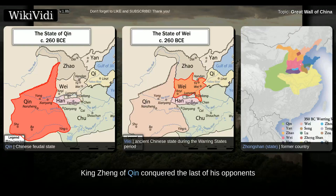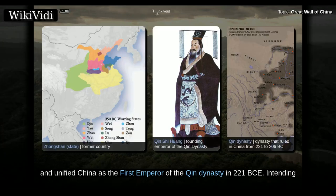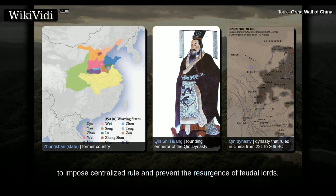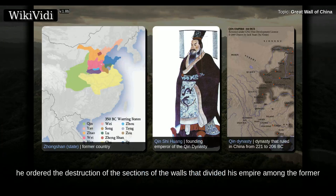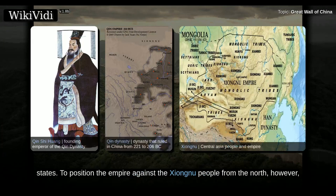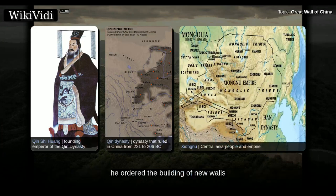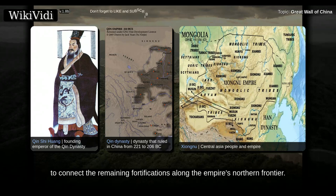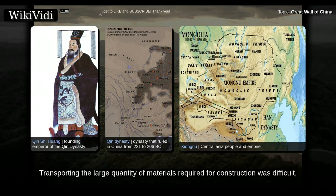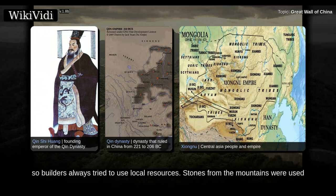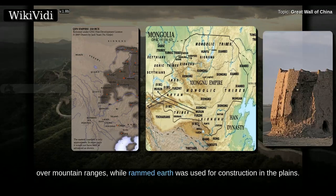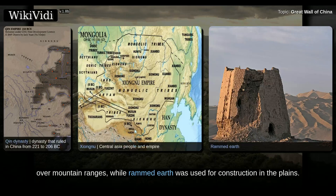King Zheng of Qin conquered the last of his opponents and unified China as the first emperor of the Qin dynasty in 221 BCE, intending to impose centralized rule and prevent the resurgence of feudal lords. He ordered the destruction of the sections of the walls that divided his empire among the former states, to position the empire against the Zornu people from the north. However, he ordered the building of new walls to connect the remaining fortifications along the empire's northern frontier. Builders always tried to use local resources — stones from the mountains over mountain ranges, while rammed earth was used for construction in the plains.